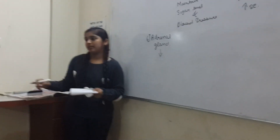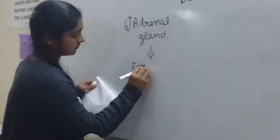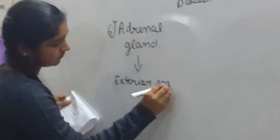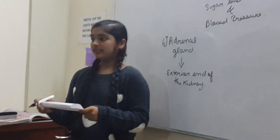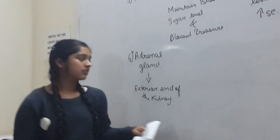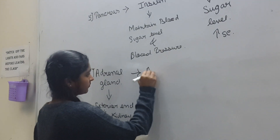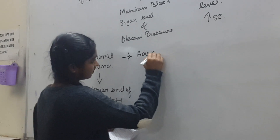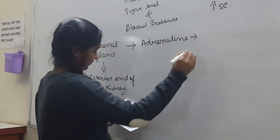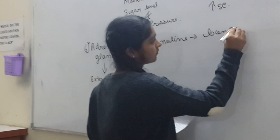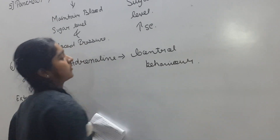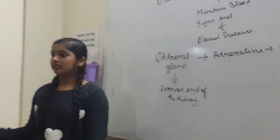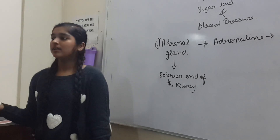The adrenal gland is present at the exterior end of the kidney. It secretes a hormone named adrenalin, which controls our behavior in crisis situations. That is why it is also called the emergency hormone.